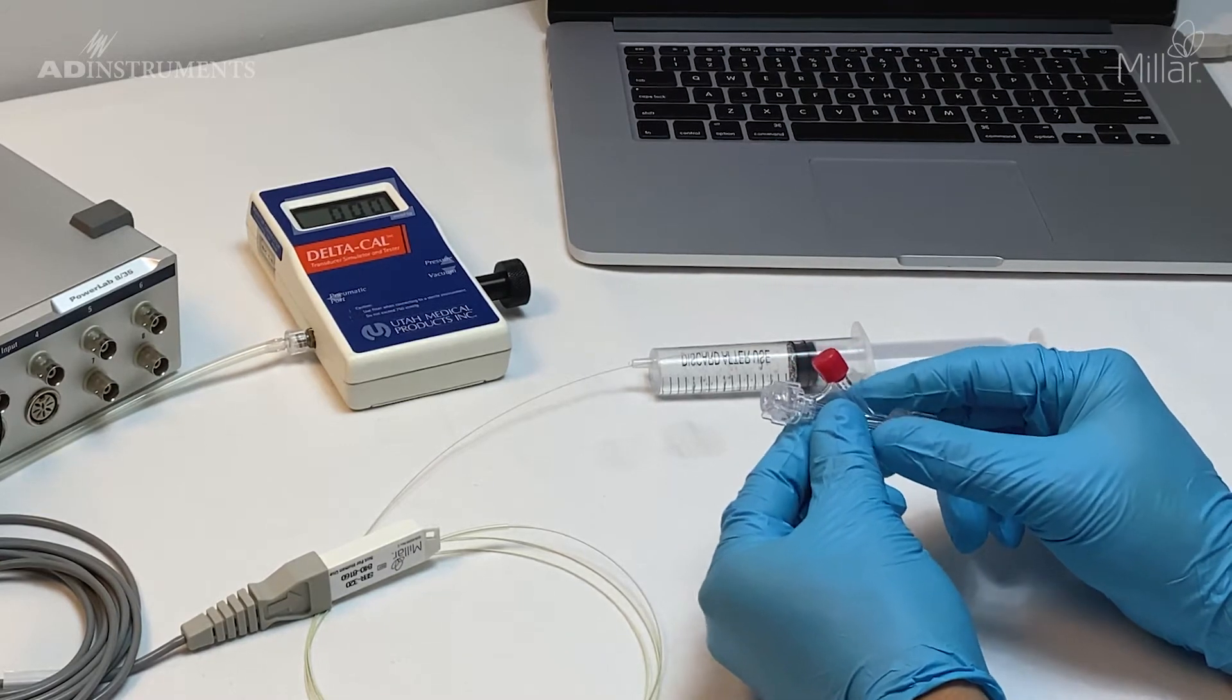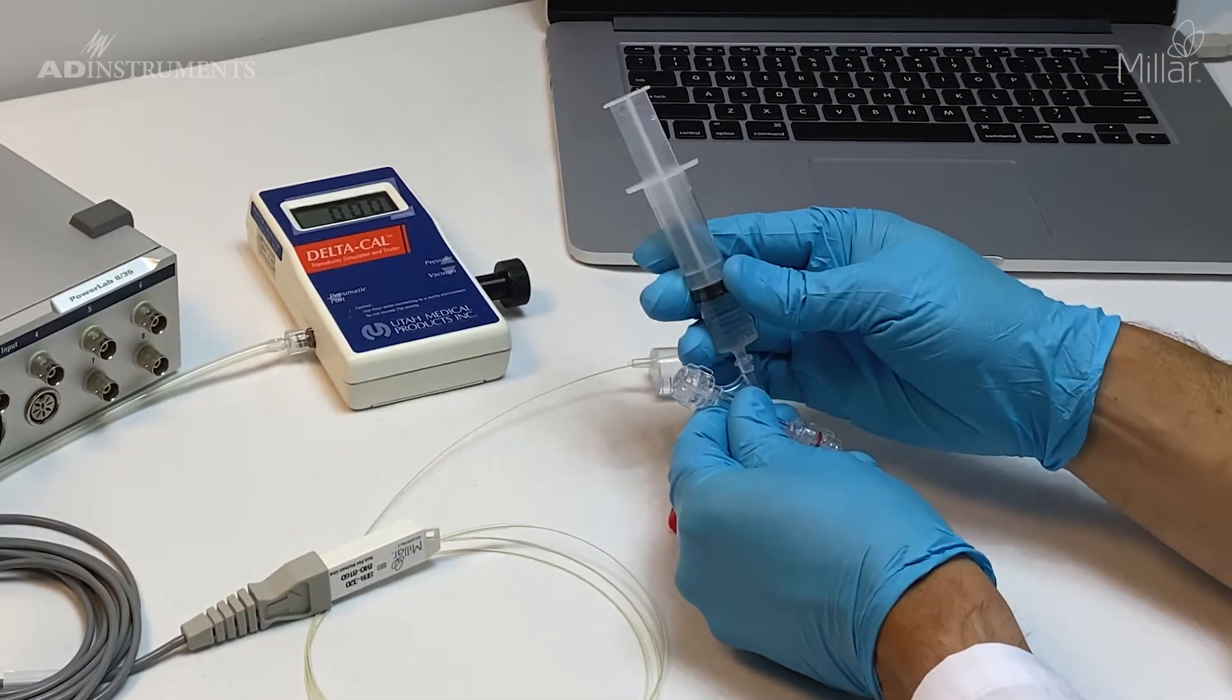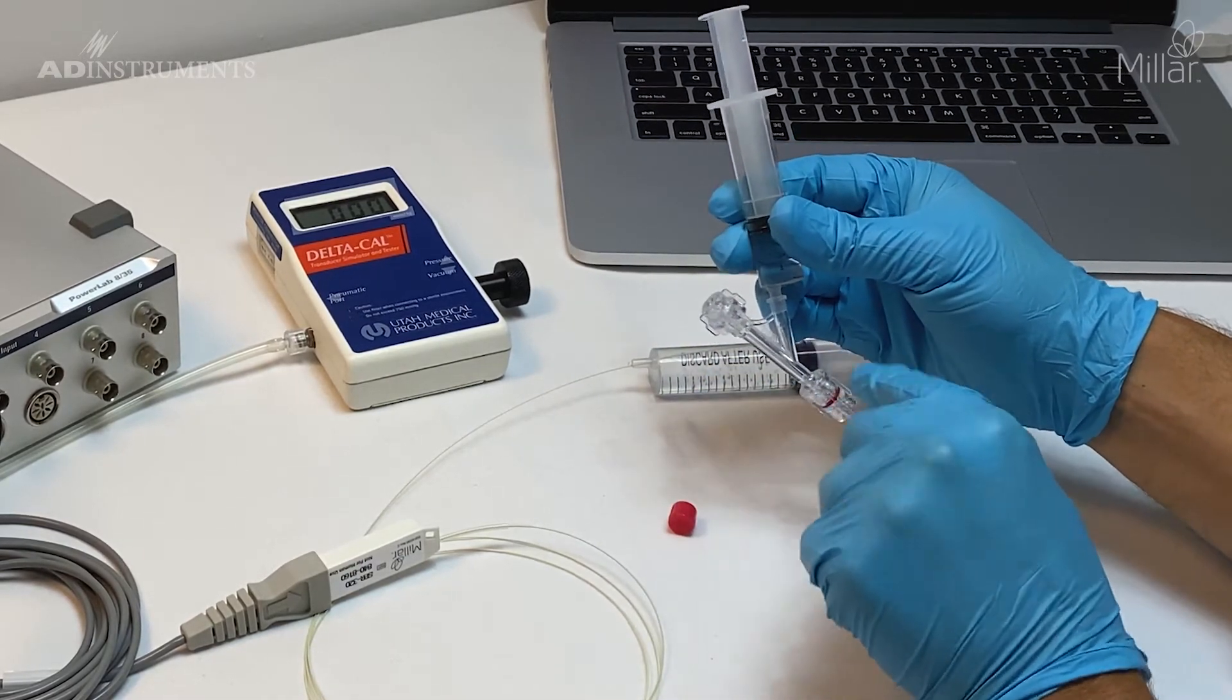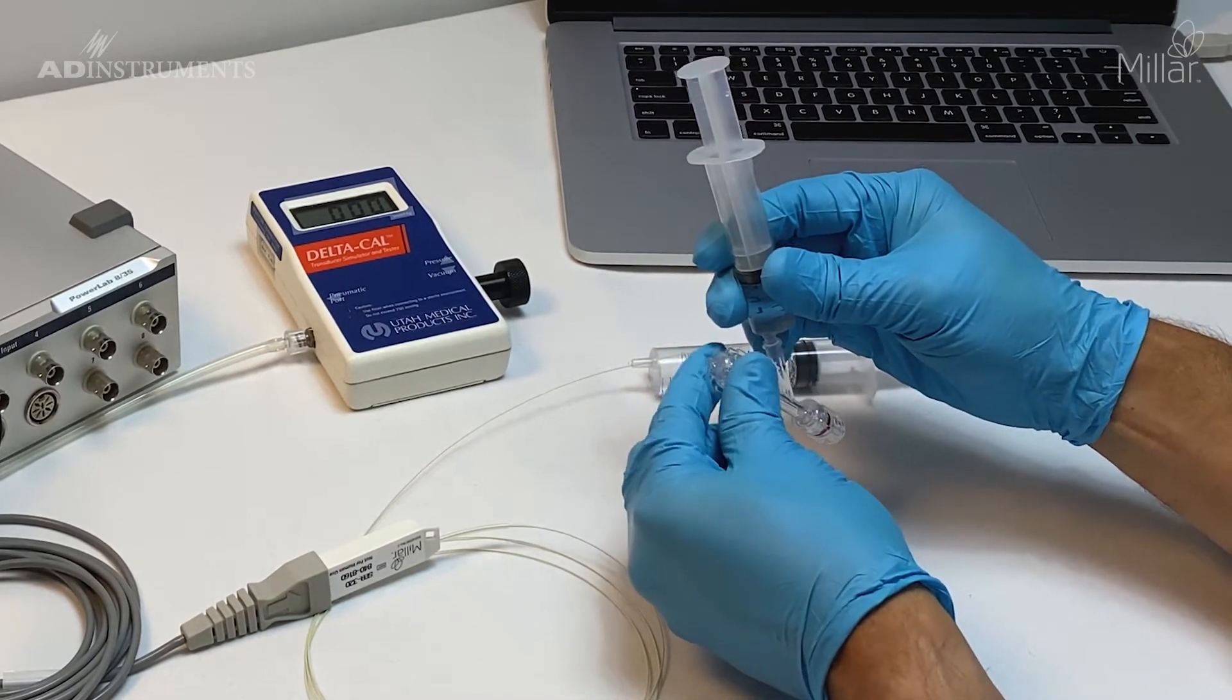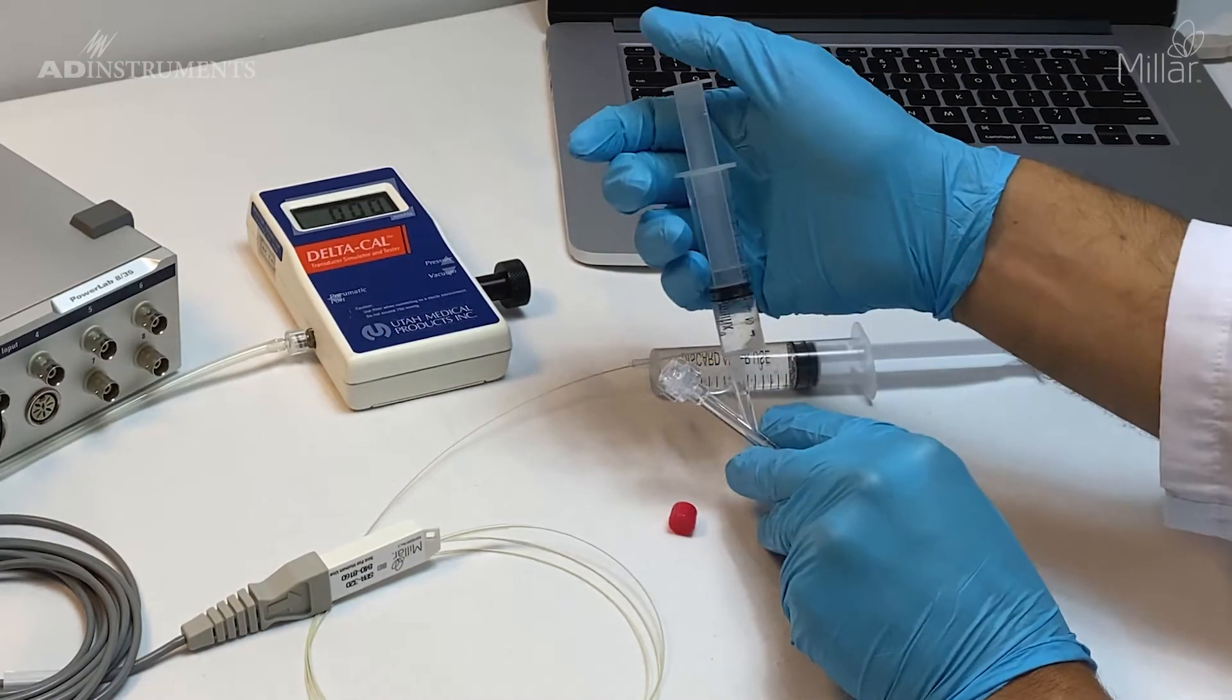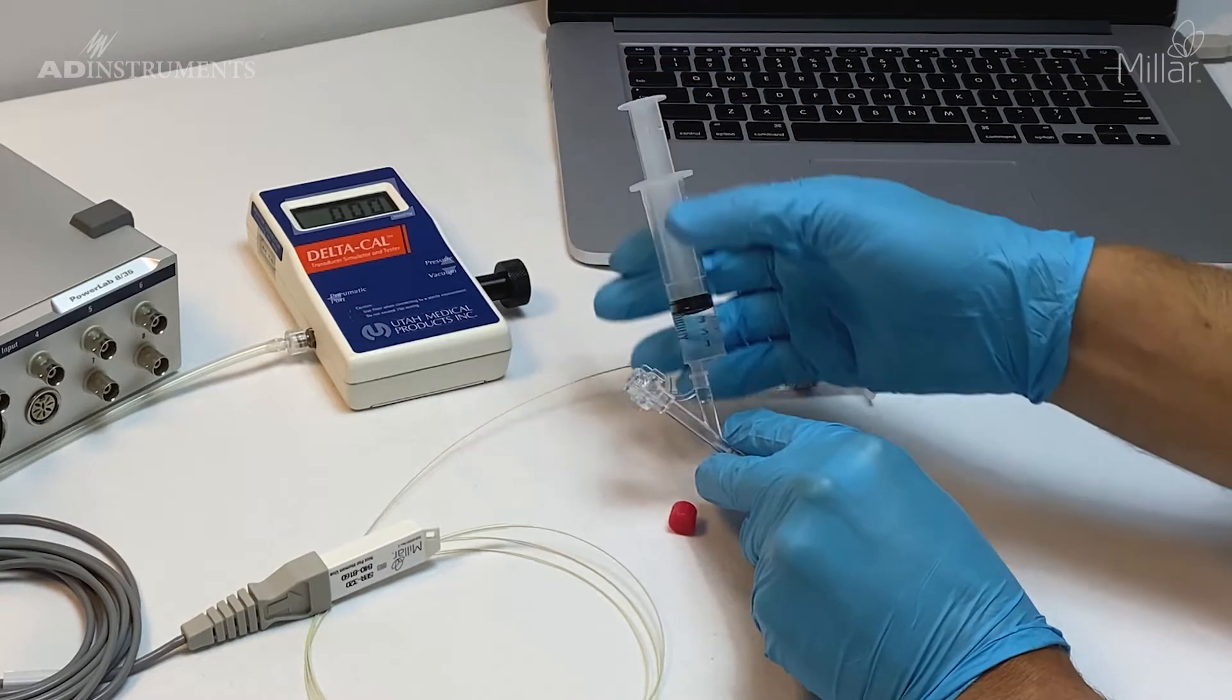First, I'll remove the red cap and connect a syringe with warm saline. I'll block off this end, make sure the other end is fully open, then slowly fill it up with saline.